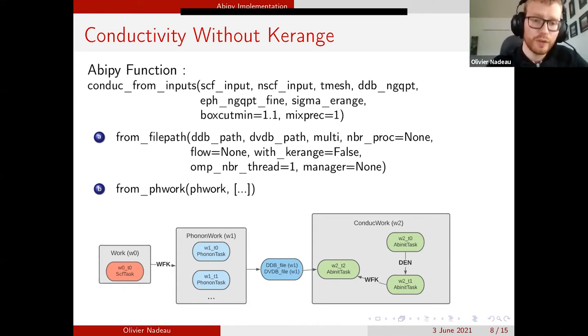In the first two works, we calculate the ddb and dvdb file. If we already have them, we can start directly at the last work, which is conductwork. We do three calculations in conductwork. The first one is a ground state self-consistent calculation to obtain the density file. The second work is a non-self-consistent calculation to obtain the wavefunction file. And finally, we calculate the conductivity in the last work.